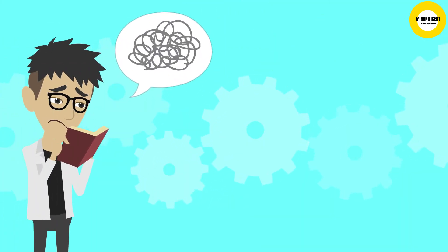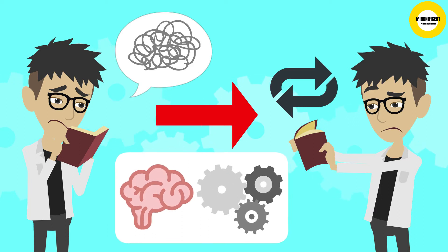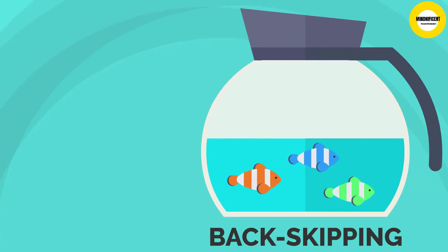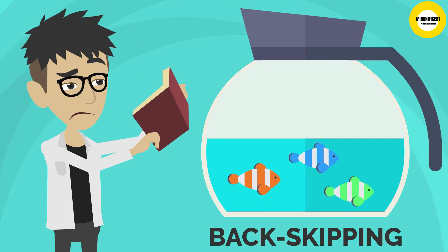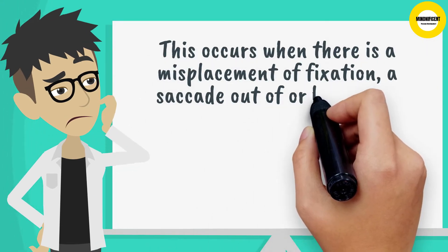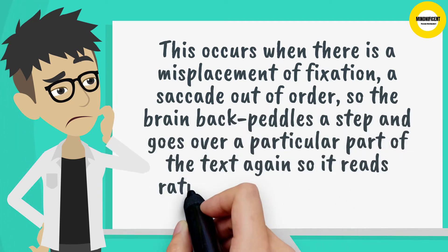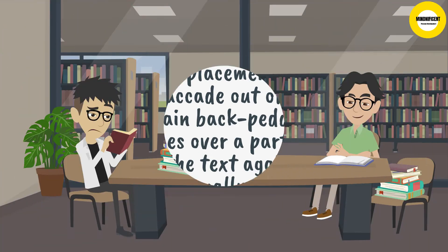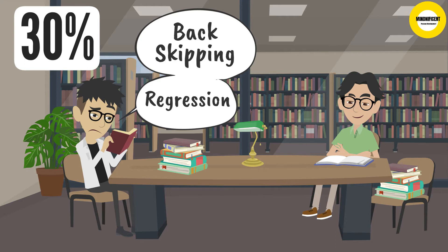You might have experienced this before, where you don't fully understand something, and before you know it, you're reading that line again. It's a consciously driven process, and one that's common amongst the average reader. Then, there is back skipping, which is a different kettle of fish entirely. You're totally unaware of this process, but your subconscious constantly skips back to previous saccades and re-reads that particular snapshot. This occurs when there is a misplacement of fixation, a saccade out of order, so the brain backpedals a step and goes over a particular part of the text again, so it reads rationally and makes sense. These processes of regression and back skipping occur for roughly 30% of the duration of your reading time.